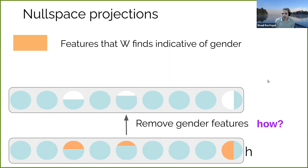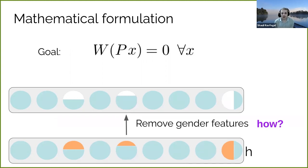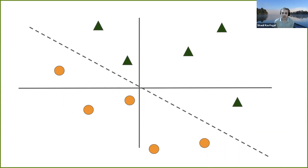The question that remains is how to remove these features — how do we know which features are responsible for encoding the protected attribute, and how do we remove them? Mathematically, our goal is to learn some projection matrix P which removes these features, such that after multiplying the input by P, any linear classifier W that tries to predict gender will always predict the zero vector — becoming completely unable to predict the sensitive information.